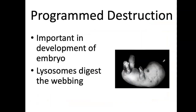Lysosomes are also important in programmed destruction. For example, when an embryo is developing, we have webbed fingers and webbed toes. Even though you'd be great swimmers if that stayed, it gets broken down. Lysosomes migrate to that area, release their contents, and break down that tissue — and so you're born without that webbing between the toes and fingers.